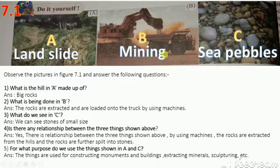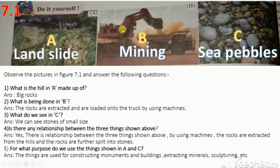Can you see picture B? It is mining. Here, some working process is going on. Some men are on the mountainside. To obtain valuable stones or rocks from the earth, this is known as mining.